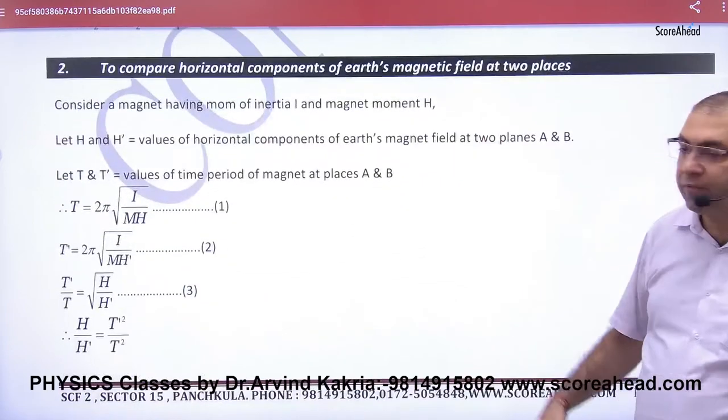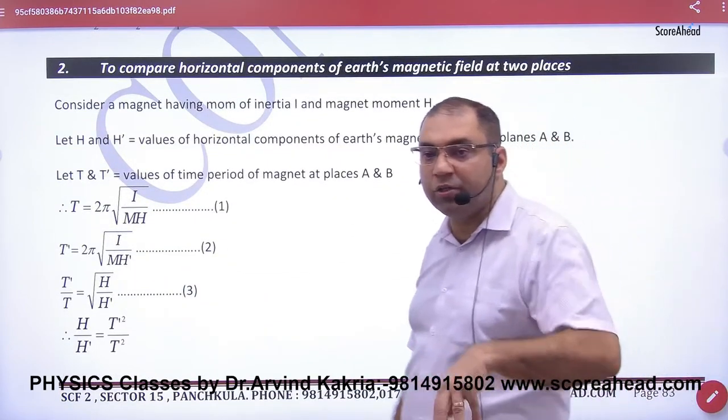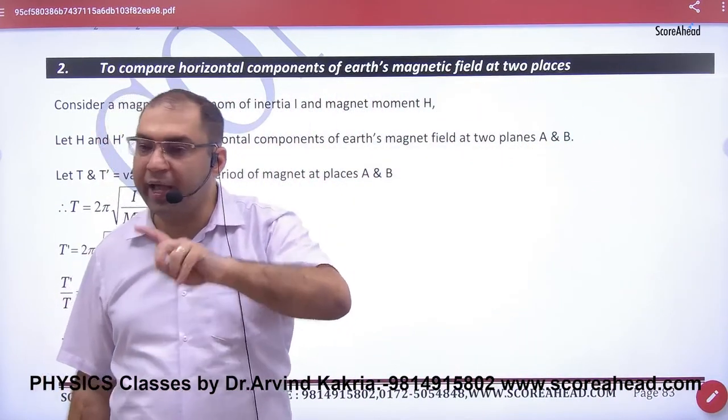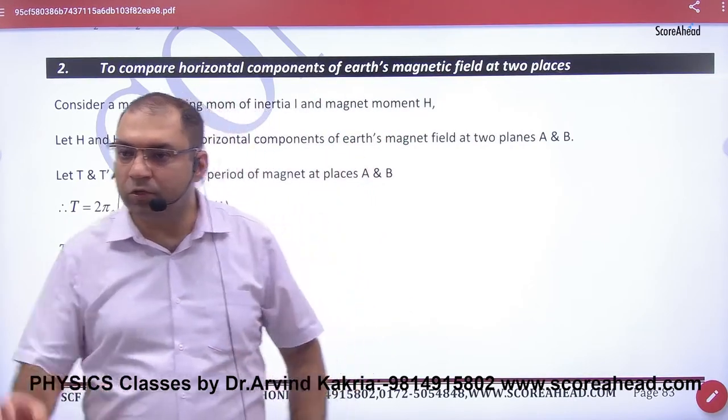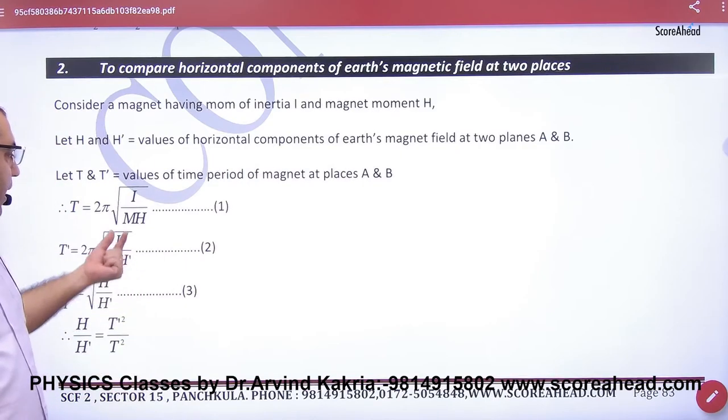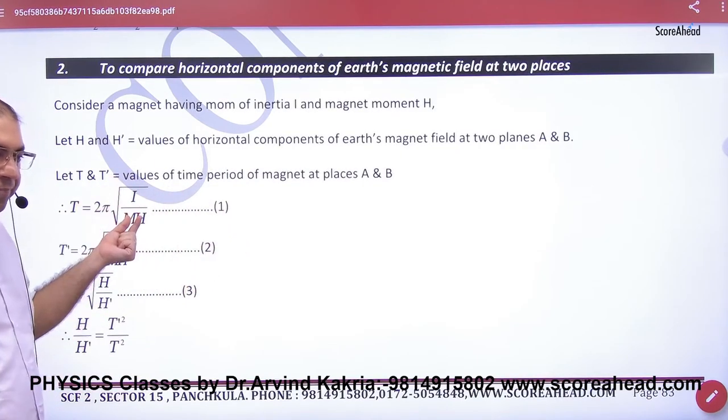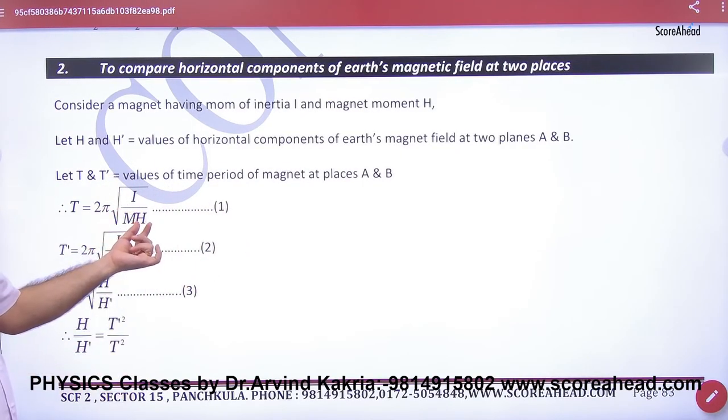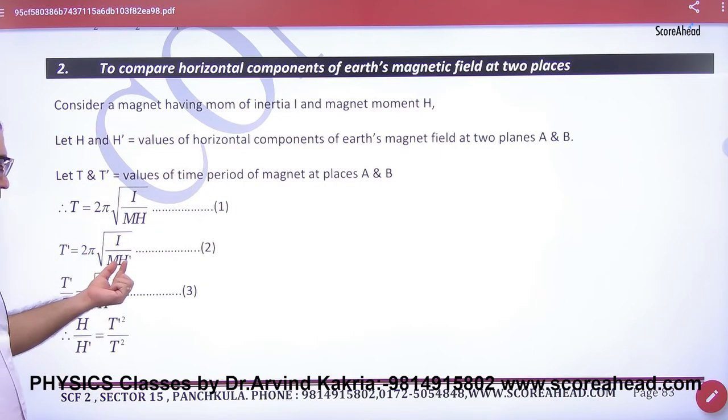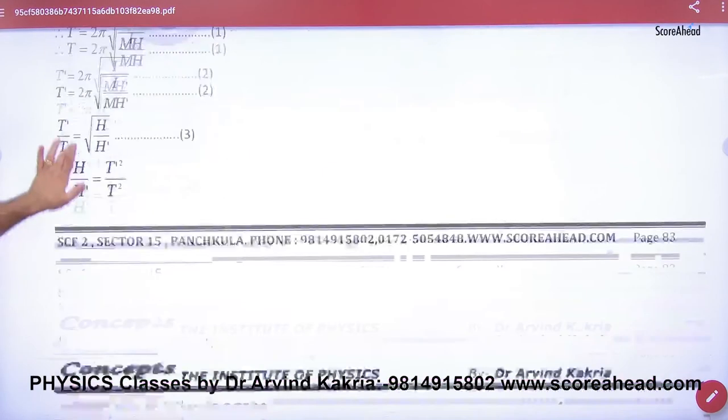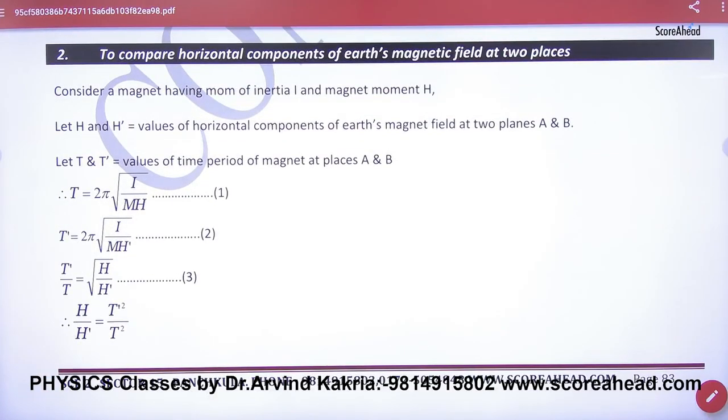Last case: if you have two different locations to compare horizontal components, you have one magnet and put it in the apparatus. The earth field there is H and time period T. Then take another location - H changes, time period changes. Divide and the answer is: earth field can be compared at different locations.